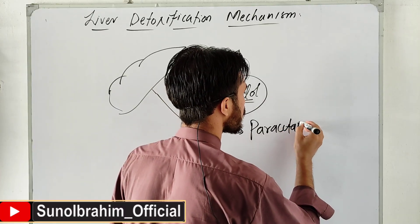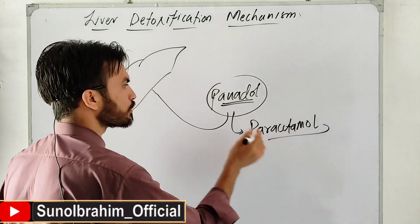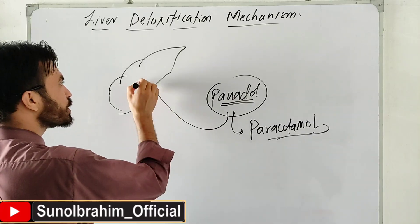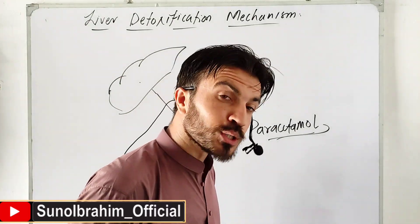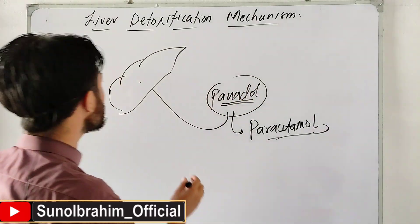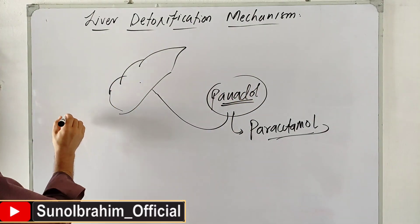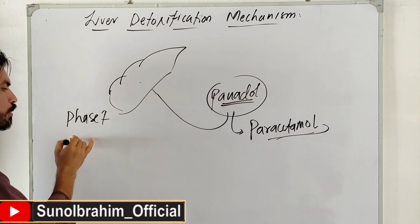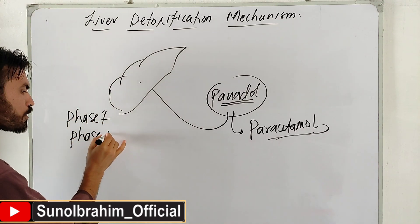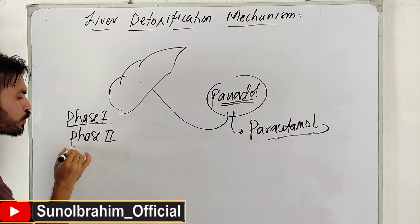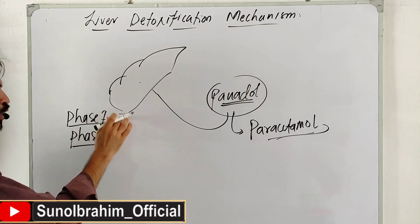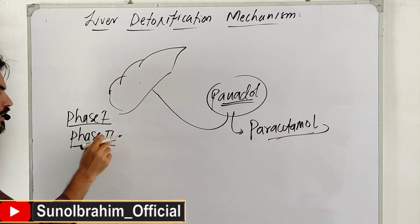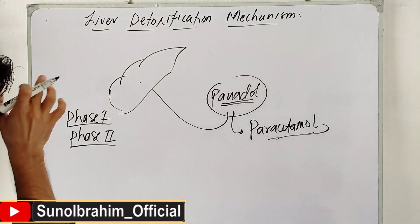When you take Panadol, its actual chemical compound is Paracetamol. Paracetamol reaches the liver, and the liver has two mechanisms to handle it. We call the first one Phase One, and the second one Phase Two. In Phase Two, most of the Panadol is processed.